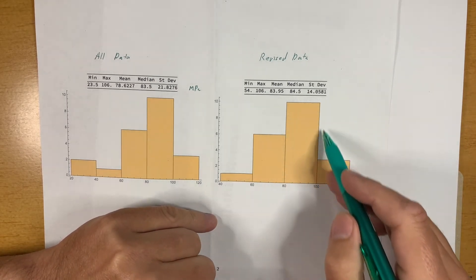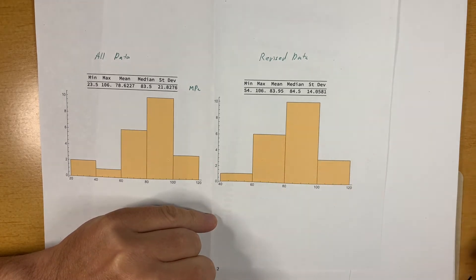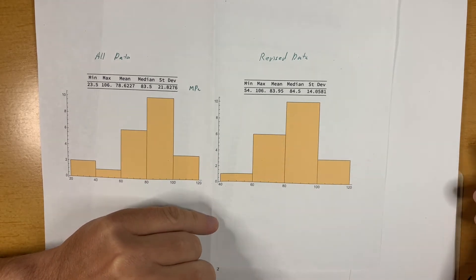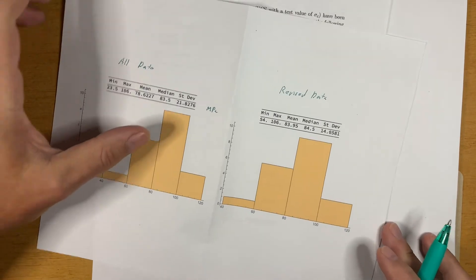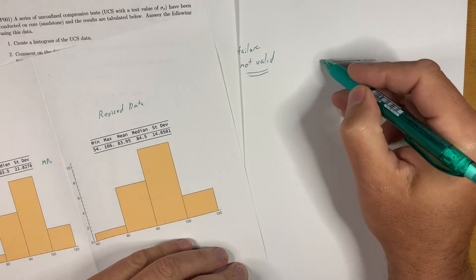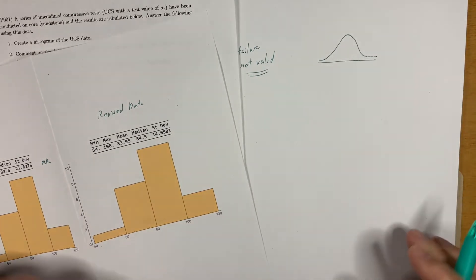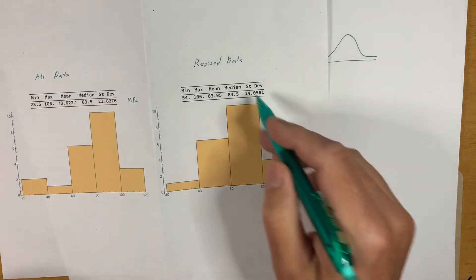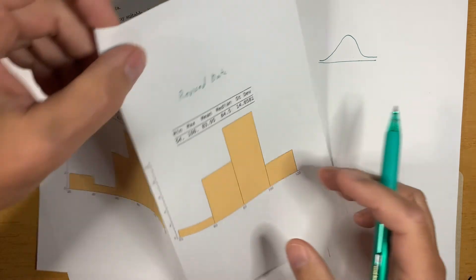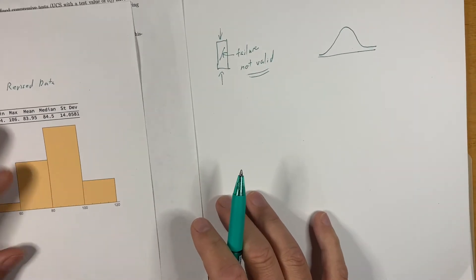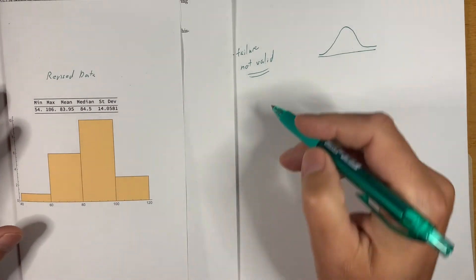And now we look at the histogram here that was revised. Again, I only used a few bins. Probably I should have used maybe twice as many. But you can see it produced a fairly normal distribution of the data. It looks very much like a normal bell-shaped distribution. So that looks pretty good. And so I think we can use this revised data to determine our design value for the unconfined compressive strength.